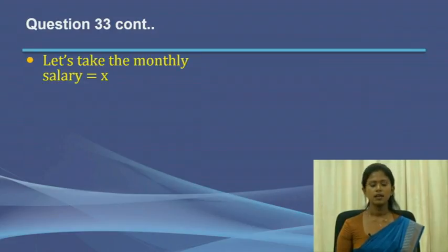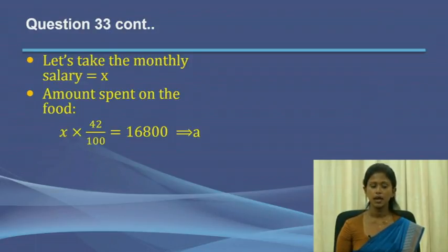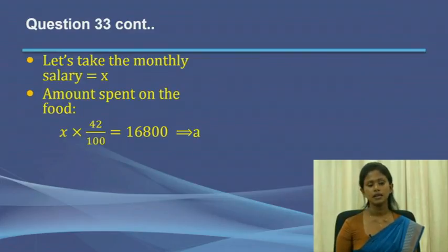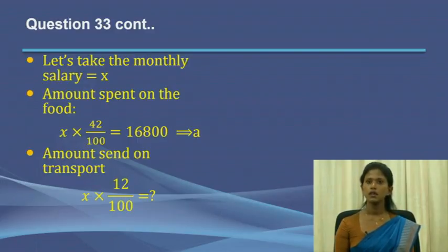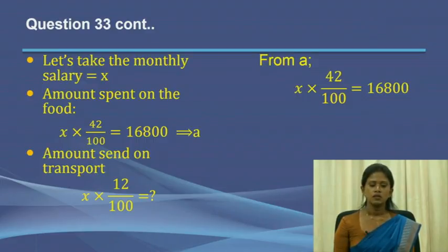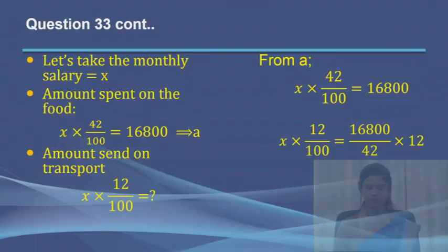Since the salary is not given, we take an arbitrary X as the monthly salary. The amount spent on food is given as 16,800, which equals X multiplied by 42 divided by 100, since 42% is the percentage spent on food. What we need to find is the amount spent on transport, which is X multiplied by 12 divided by 100. From equation A, we can divide the two equations to find that amount.